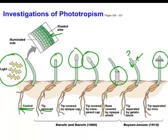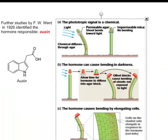He also demonstrated that if you separate the tip with something impermeable — in this case a piece of mica — the chemical can't get through, it gets blocked, and nothing happens. So we now know that the control of phototropism involves a chemical that is produced in the tip in response to sunlight.